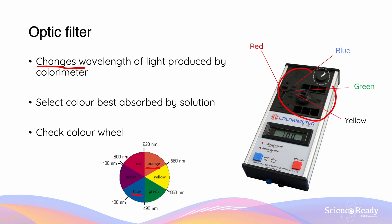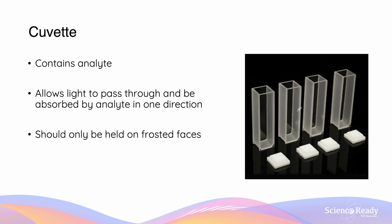Looking over here, we see squares with one protruding in the center — this is where we put our analyte in, and it is contained in what we call a cuvette. Cuvettes are small rectangular vessels which contain the analyte. They're made from a variety of transparent materials such as glass, quartz, or sometimes just plastic.